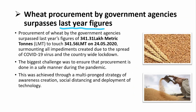Next news: wheat procurement by government agencies has surpassed last year's figures. Despite the lockdown running for over two months, procurement hit an all-time high — last year it was 341.31 lakh metric tons, and this year it crossed that by 25,000 metric tons to reach 341.56 lakh metric tons as of 24th May 2020, with procurement still ongoing in states like Haryana. The biggest challenge was ensuring safe procurement during the COVID-19 pandemic when transportation and other activities were largely suspended.